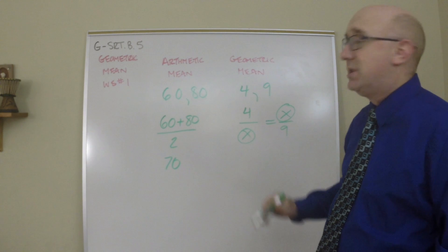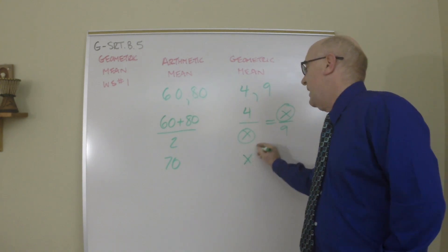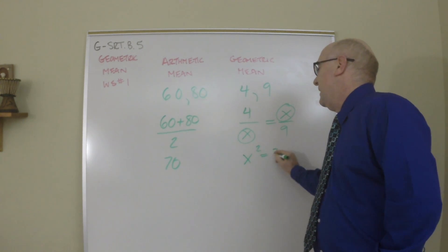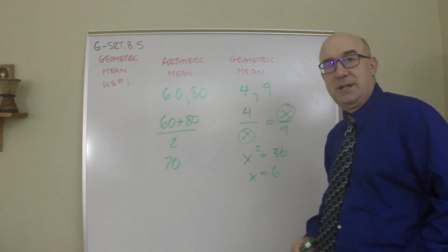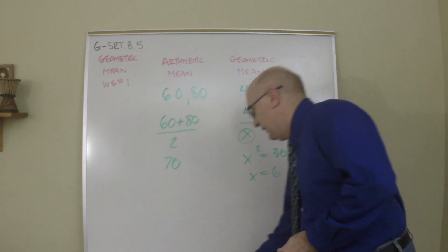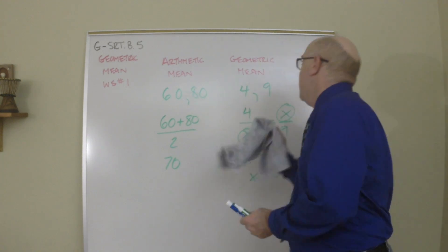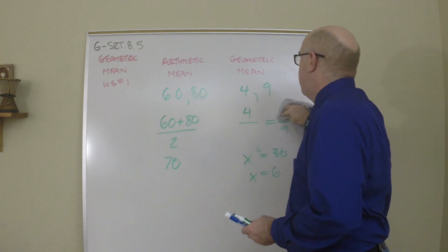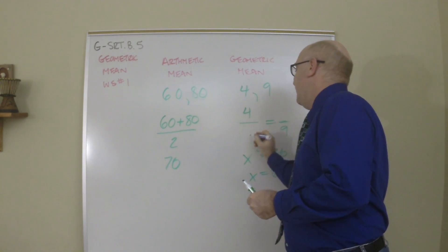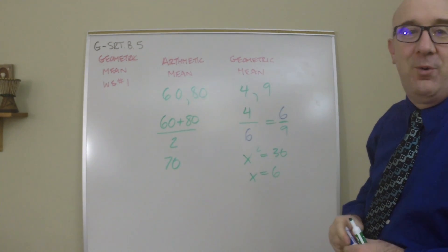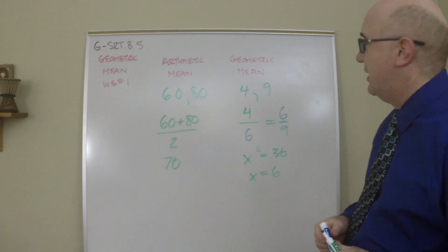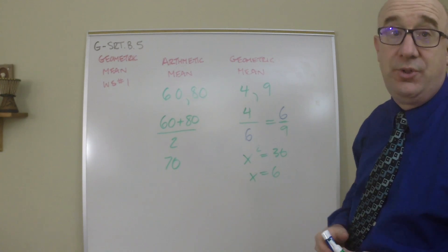And it will be somewhere between 4 and 9. Now this number usually is a decimal. But in this case, I picked some numbers that make this easy because 4 times 9 is 36, and we get a number of 6. Watch that if I put in that number 6 there, in where the x's are, then I get actually a proportion that is the same. 4 sixths is equal to 6 ninths. They're all 2 thirds.